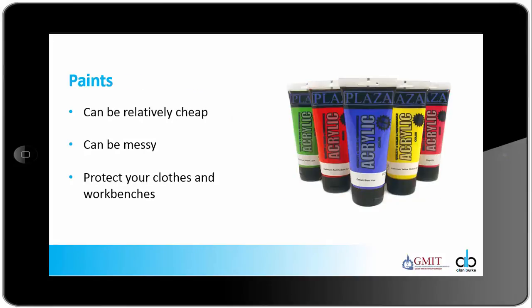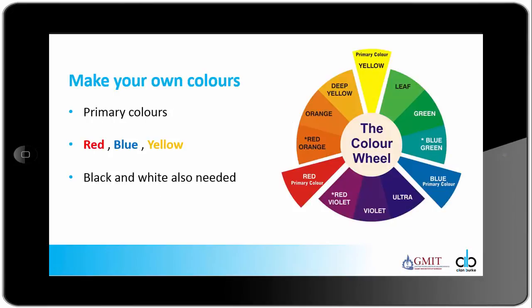Paints can be bought relatively cheaply — I buy all my paints from the pound shop. It can be very messy so you need to protect your clothes and work benches when using paints. You can mix your own colours: the three primary colours are red, blue and yellow, and from a mix of any of these colours we can create almost any colour. For example, mixing red and blue gives you dark blue or violet shades. If you have black, white, red, blue and yellow paint you're well sorted to create any colour you may need for your model.